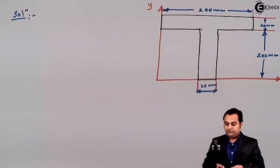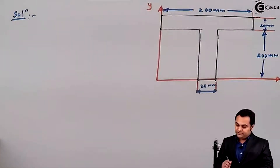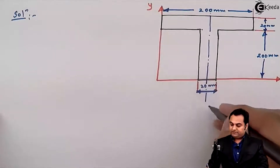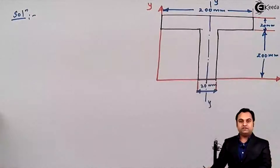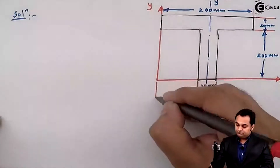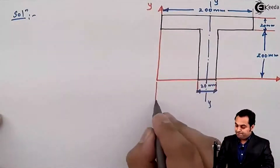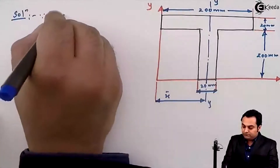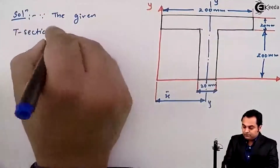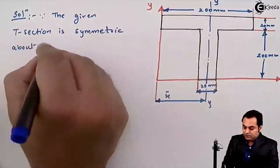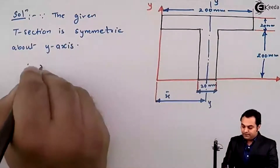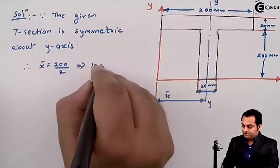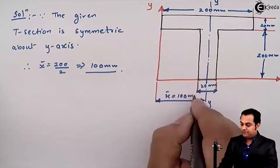We need to find the moment of inertia about the X-axis and Y-axis for the given T-section. First, we should locate the centroid. Since the T-section is symmetric about the vertical Y-axis, the distance x-bar from the Y-axis will be exactly half of 200 mm, that is, x-bar = 100 mm.